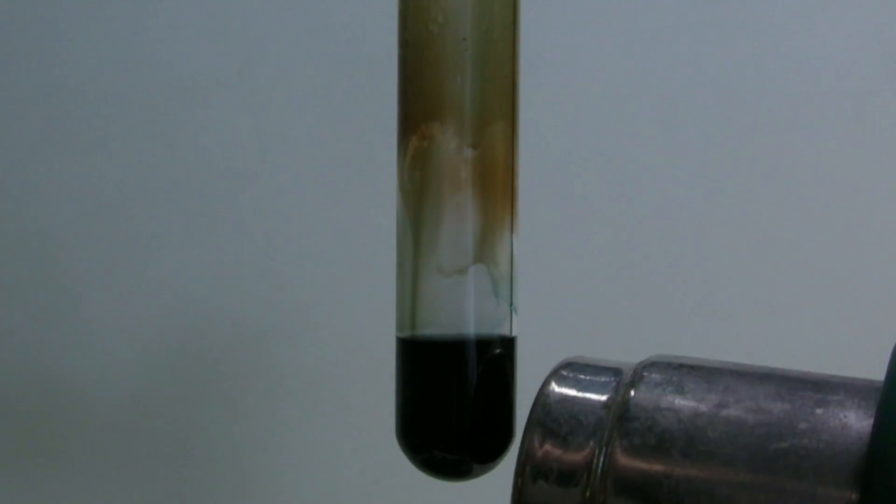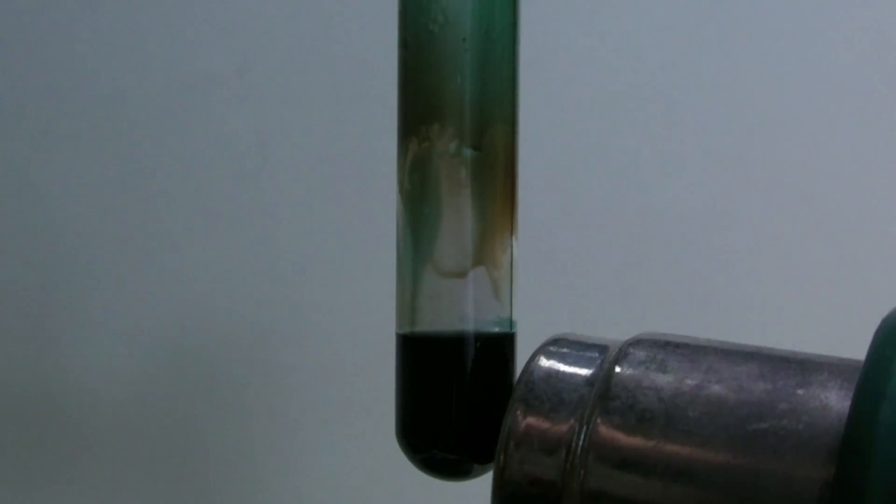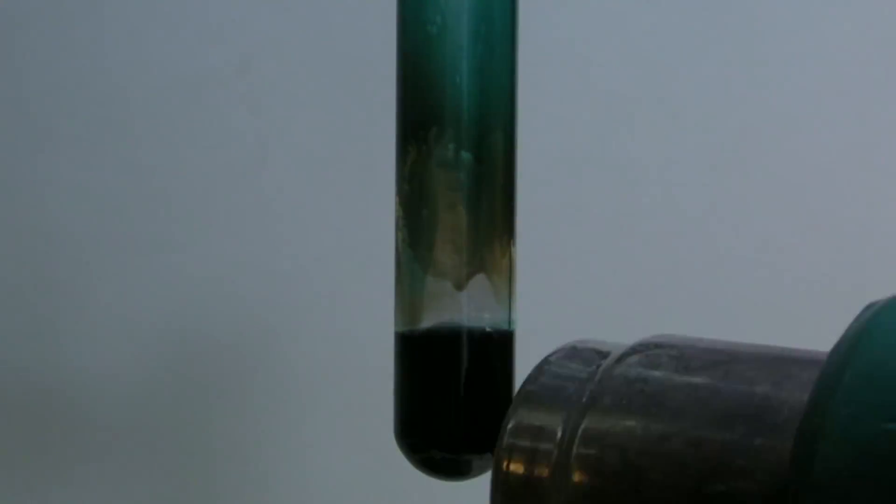When more iodine is added, the color is difficult to observe but can be seen very easily by heating the mixture until sulfur trioxide and iodine begin to condense above the solution.